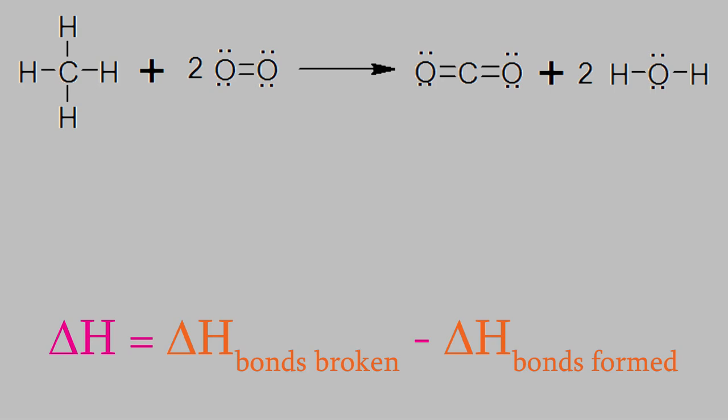So let's look at the reactants first. The methane consists of four carbon-hydrogen single bonds, and the oxygen consists of an oxygen-oxygen double bond. Don't forget that the coefficient in the balanced reaction tells us that we have two oxygen molecules. So all together, we're breaking four CH single bonds and two oxygen-oxygen double bonds.